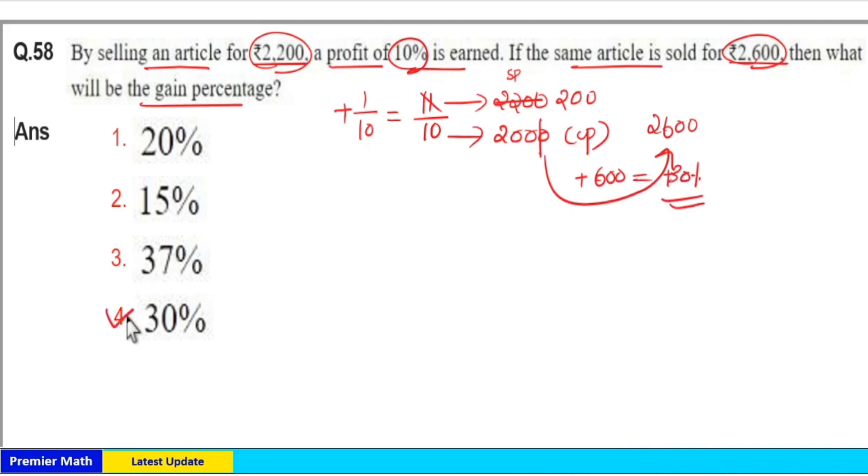That is, here profit is equal to 600 out of 2000 into 100, which is equal to 30 percentage.